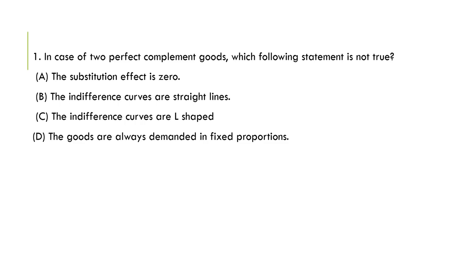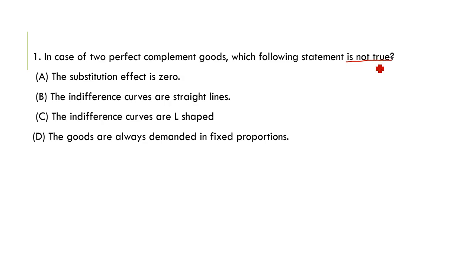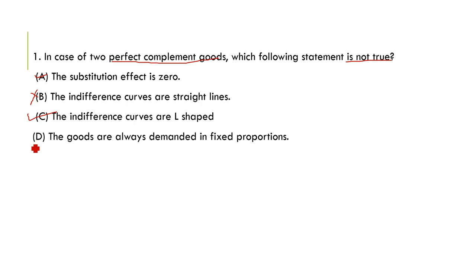The first question is: In the case of two perfect complement goods, which of the following statements is not true? Option A: the substitution effect is zero — this is a correct true statement. Option B: the indifference curves are straight lines — for perfect complements the curves are L-shaped, not straight lines, so this statement is wrong. Option C: indifference curves are L-shaped — correct. Option D: the goods are always demanded in a fixed proportion — correct. So the answer, the not-true statement, is B.